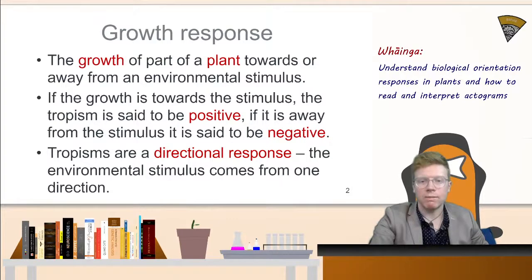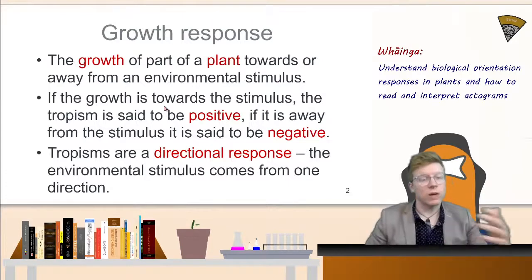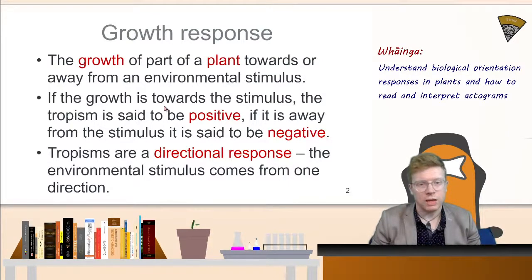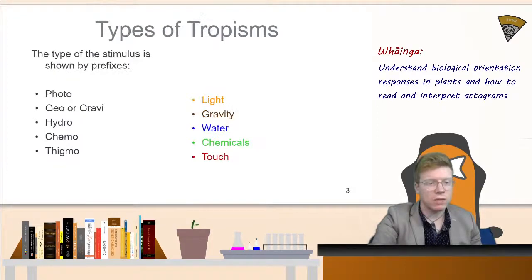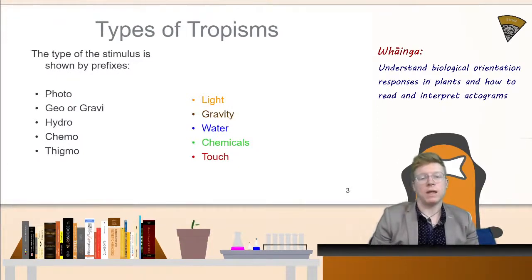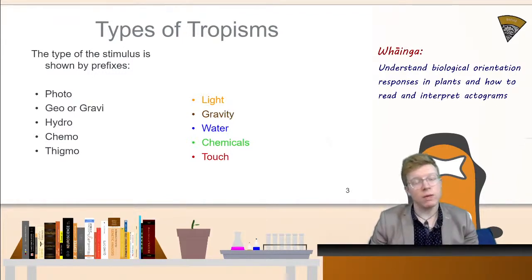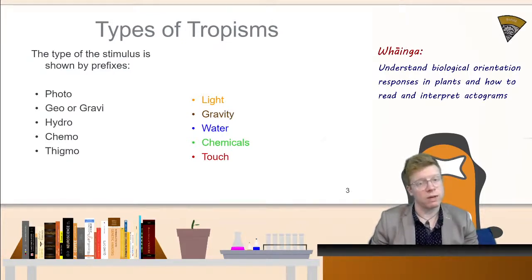Growth responses come in two major groups. Our first group is tropisms. Tropisms are directional responses — the environmental stimulus comes from a certain direction, and if the growth is towards that stimulus, it's positive; if it's away from the stimulus, we call it negative. There are a variety of different prefixes you need to know. These stick in front of the word 'tropism' and describe what type of stimulus is being used — for example, if light is the stimulus, the prefix is 'photo', giving us phototropism.